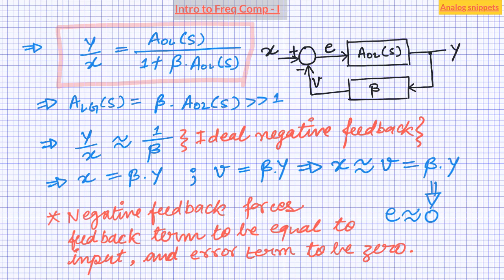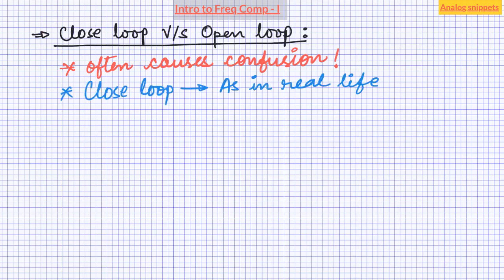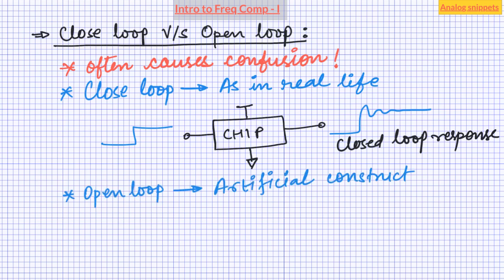We will next move to clarify the terms closed loop and open loop. These terms often appear in relation to negative feedback systems and are often confusing, especially to beginners. Closed loop is similar to the system in real life — for example, if you have a chip in the lab and you are measuring the transient performance, you are measuring the closed loop response. Open loop, on the other hand, is an artificial construct to assist the design process. Both closed loop and open loop are uniquely related to each other because both describe the same system. Both can be used to analyze the stability of a system.